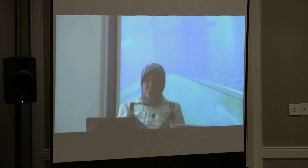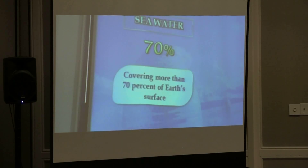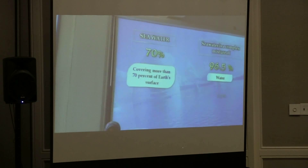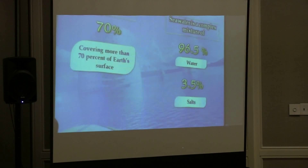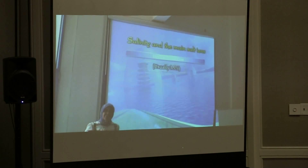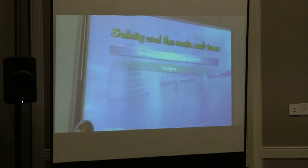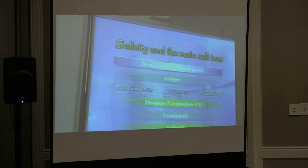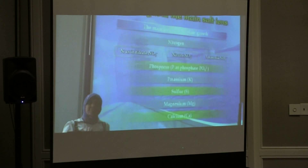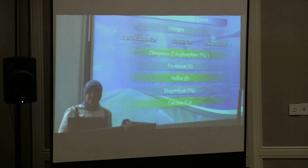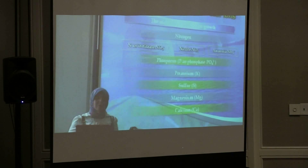Sea water, as we all know, covers 70% of earth's surface. Sea water itself is a complex mixture of 96% water and 3.5% salts. These salts are of two different kinds, the most common one being NaCl. When we talk about plants and their needs for growth, we can mention that nitrogen, phosphorus, sulfur, magnesium, sodium, and potassium are all present in sea water with relative concentrations.